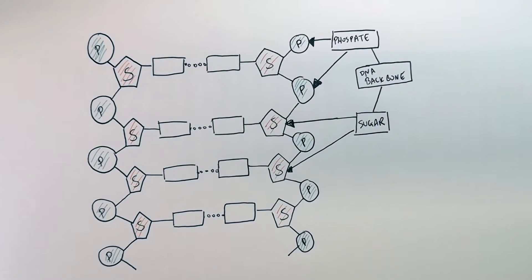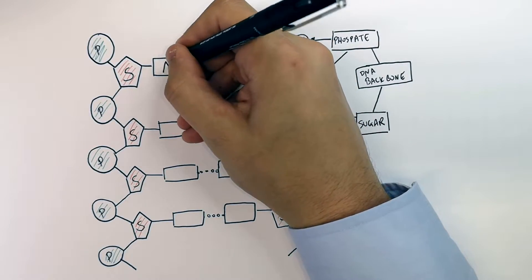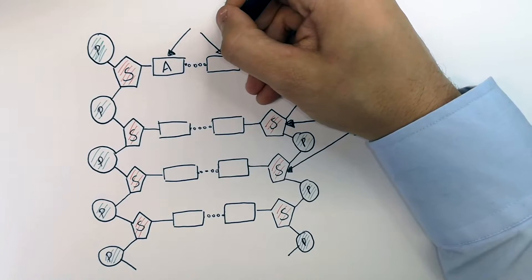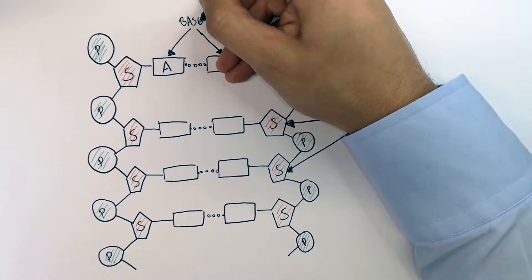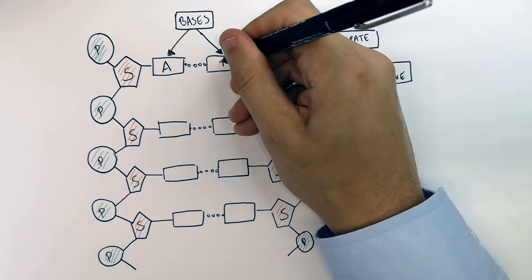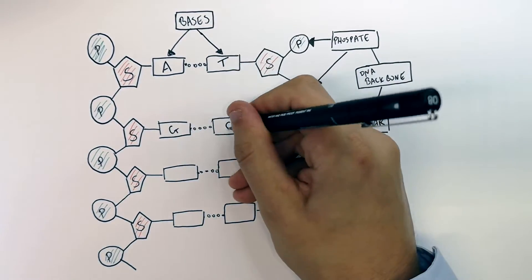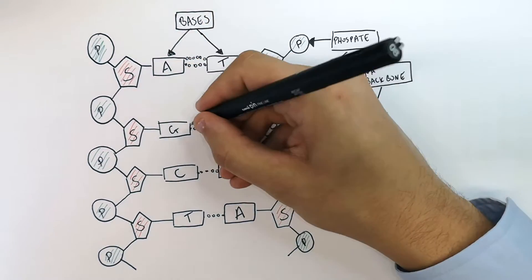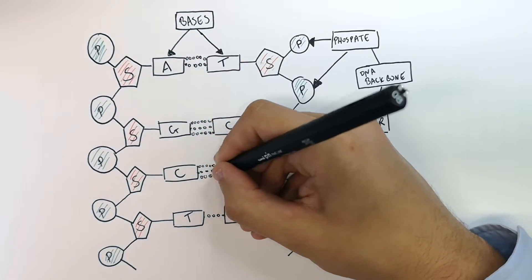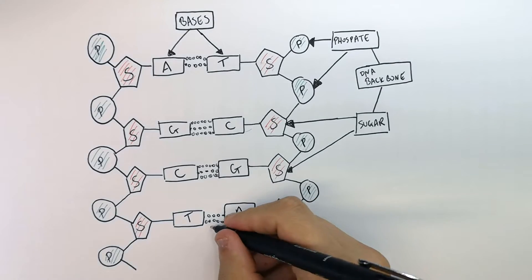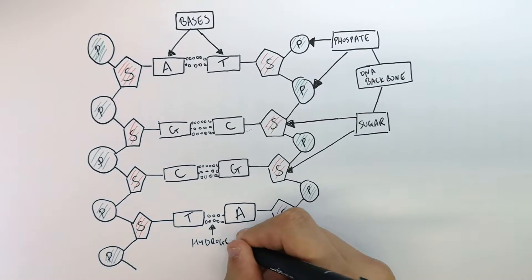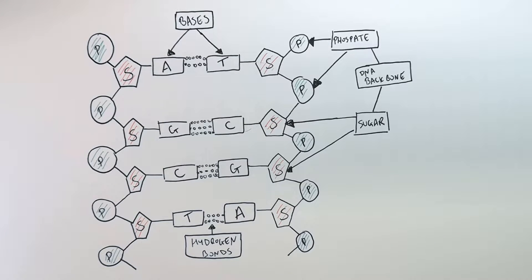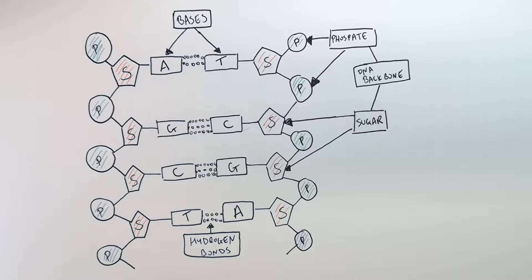The bases are attached to the sugar molecules in the backbone — always remember that. A and T bind together, G and C bind together. Hydrogen bonds are what bond the bases together. T and A are hydrogen bonded together, and they connect the two strands of DNA of the double helix.